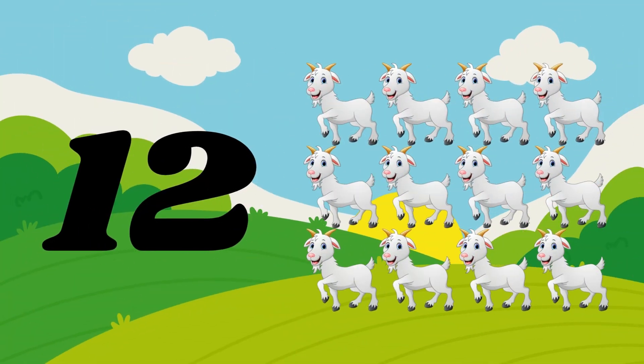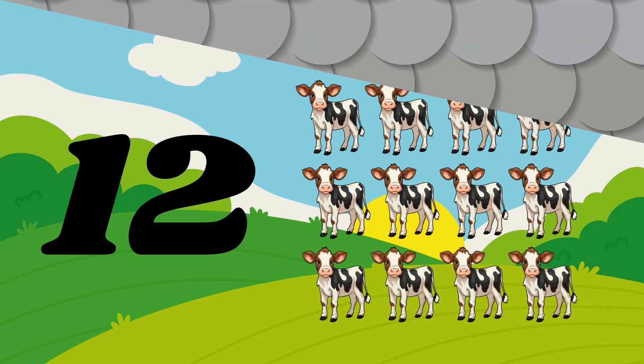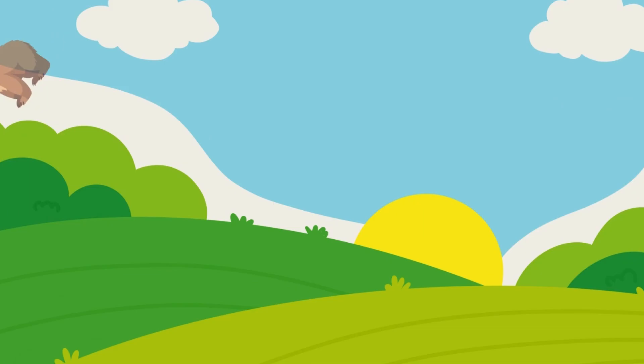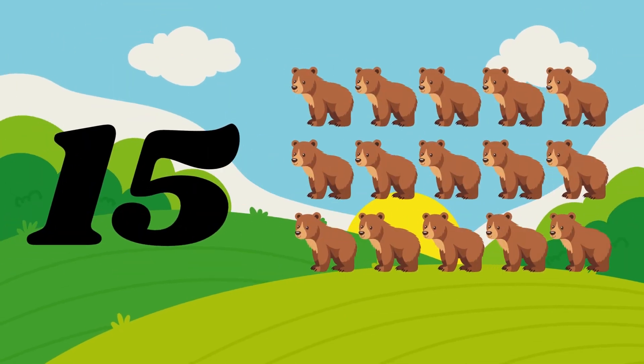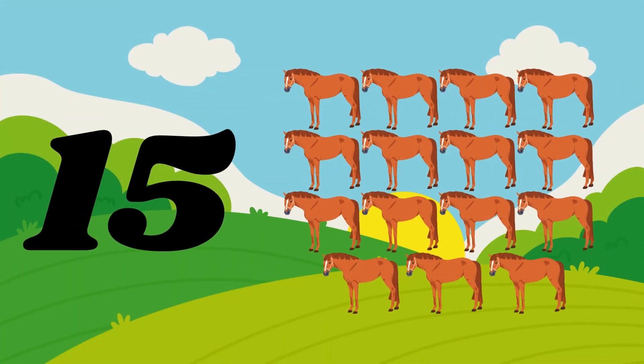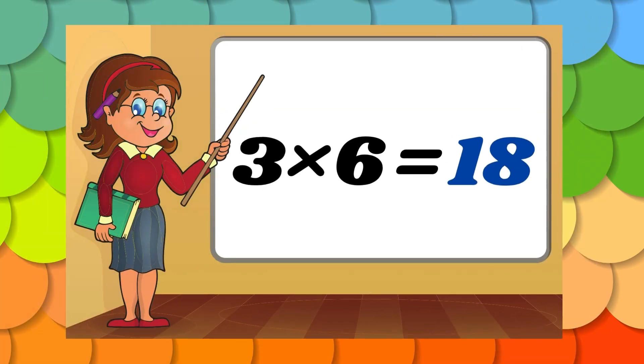Twelve goats, twelve cows. Three fives are fifteen. Three fives are fifteen. Fifteen bears, fifteen horses. Three sixes are eighteen.